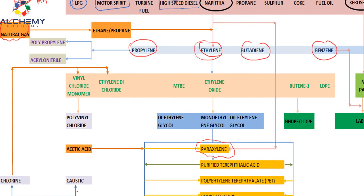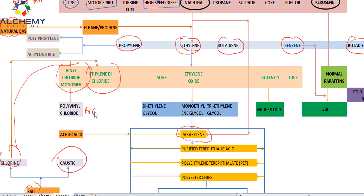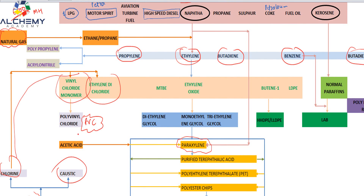For getting vinyl chloride monomer or ethylene dichloride, there is another input: from salt we can get chlorine or caustic. This chlorine is used together with ethylene to get vinyl chloride monomer, and from vinyl chloride monomer we get polyvinyl chloride — PVC. So whenever you see a PVC pipe used for drainage, drinking water supply, or any other purpose, it is derived from petroleum.